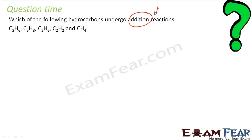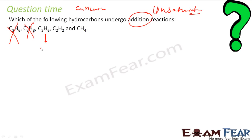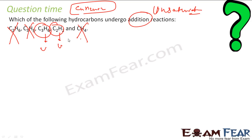Which of the following hydrocarbons will undergo addition reaction? Addition reaction happens only for unsaturated hydrocarbons. C₂H₆ is saturated — it will not. C₃H₈ is saturated because it follows the formula CₙH₂ₙ₊₂ (3×2+2=8) — it will not. C₃H₆ is unsaturated — yes, it will go for addition reaction. C₂H₂ is unsaturated — yes. CH₄ is saturated. So only C₃H₆ and C₂H₂ are unsaturated and will undergo addition reaction. Use the formula CₙH₂ₙ₊₂ to identify saturated hydrocarbons; others are unsaturated.